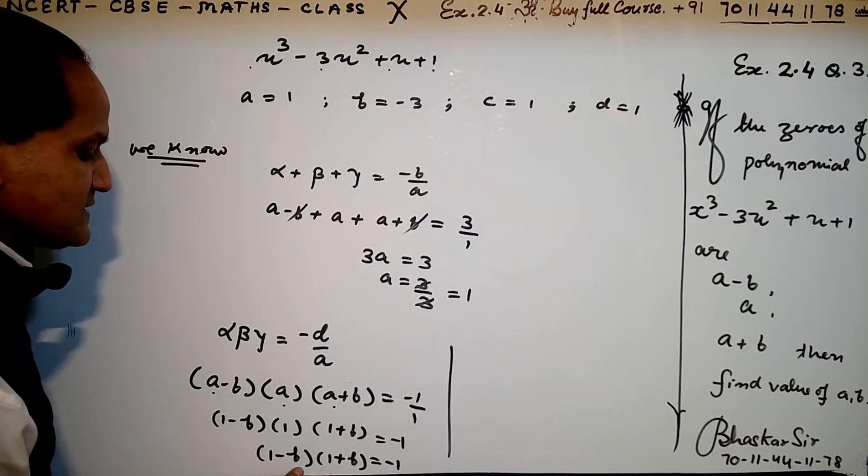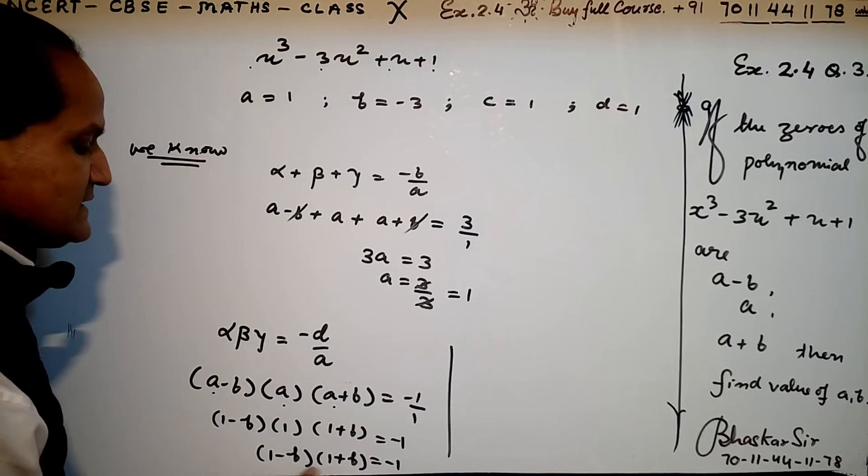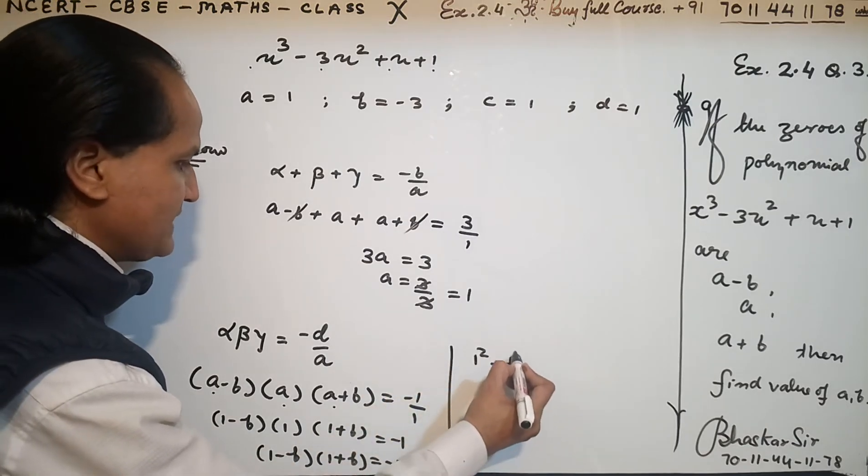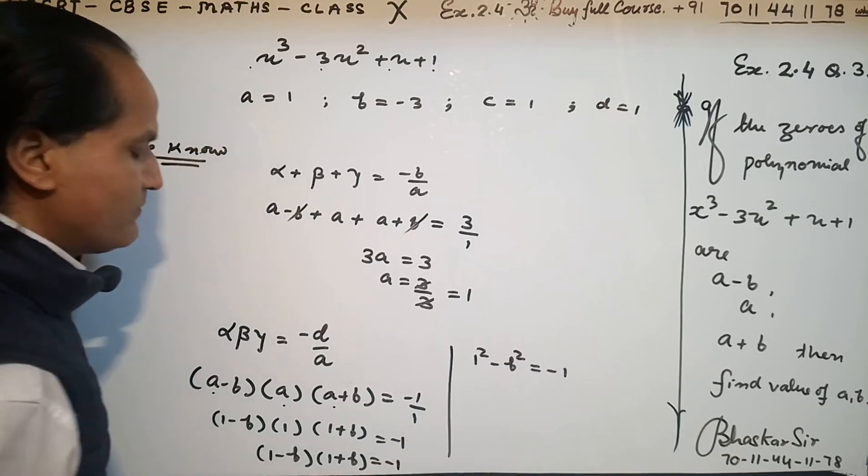You know very well the identity (a - b)(a + b) = a² - b². So we have 1² - b² = -1.